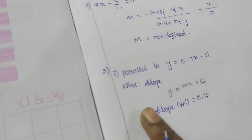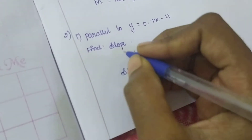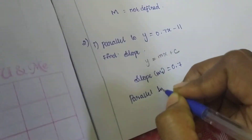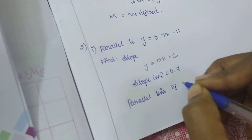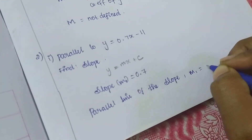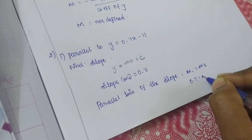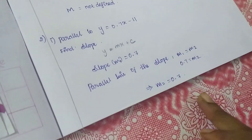For the parallel line question: for two parallel lines, m1 equals m2. Since m1 is 0.7, m2 is also equal to 0.7. That's the slope of the parallel line.